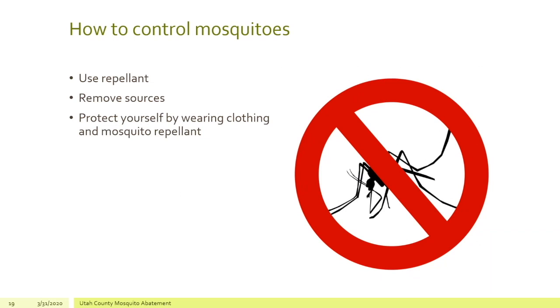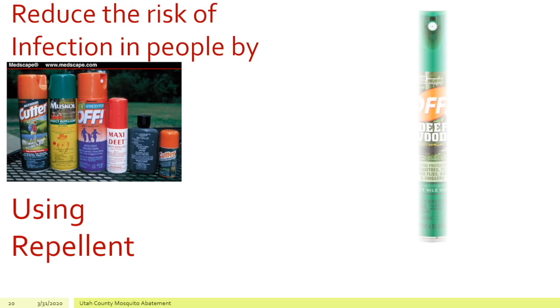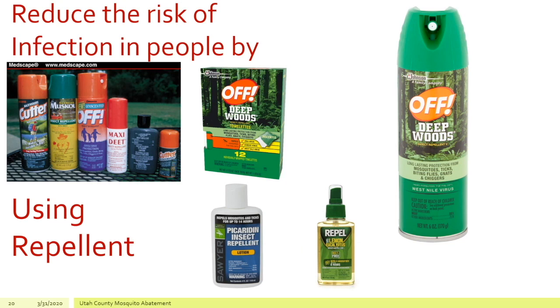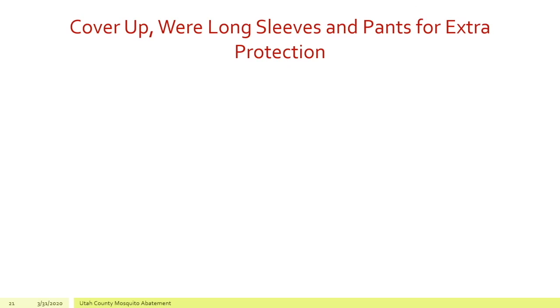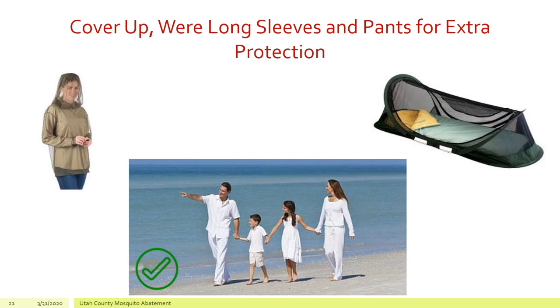So how do we control mosquitoes? There are several things we can try to do. First of all, you can use repellent. Repellent is really one of the key things — as you go out at night, put repellent on so they don't drive you off in the evening. It'll keep them from landing on you and biting you. You can also remove sources of mosquito breeding sites, and protect yourself by wearing clothing. These are several different repellents you can use. You can also cover up — wear long sleeves and pants for extra protection. Mosquito nets and covering exposed skin help us avoid being bitten.